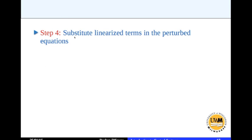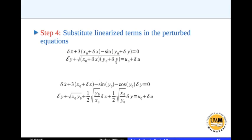Step 4 is you substitute the linearized terms in the perturbed equations. So this is your perturbed equations. You substitute for sin of y0 plus delta y and root of x0 plus delta x times y0 plus delta y. You substitute for those terms like so. And that is what that substitution is.